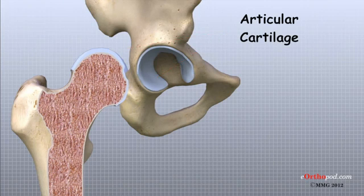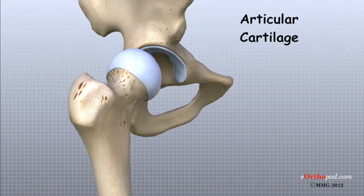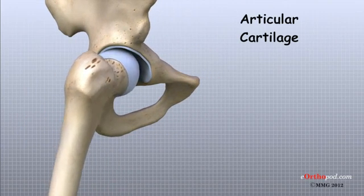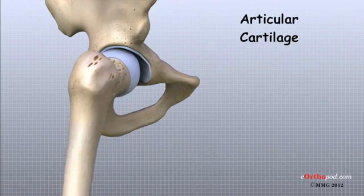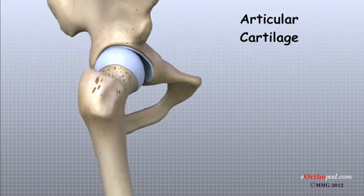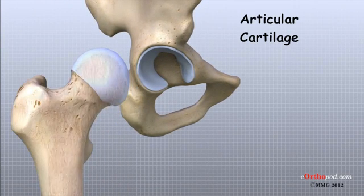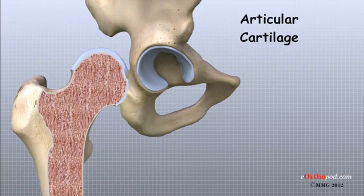Articular cartilage is white and shiny and has a rubbery consistency. It is slippery, which allows the joint surfaces to slide against one another without causing any damage. The function of articular cartilage is to absorb shock and provide an extremely smooth surface to make motion easier.